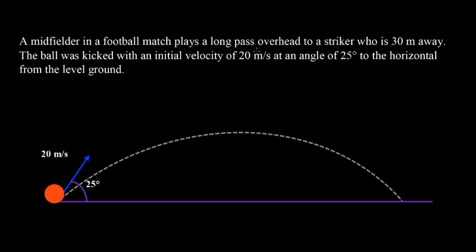It says that a midfielder in a football match plays a long overhead pass to a striker who is 30 meters away. The ball was kicked with an initial velocity of 20 meters per second at an angle of 25 degrees to the horizontal from the level ground.